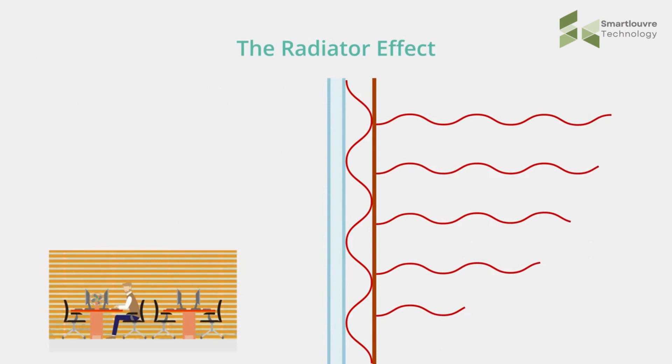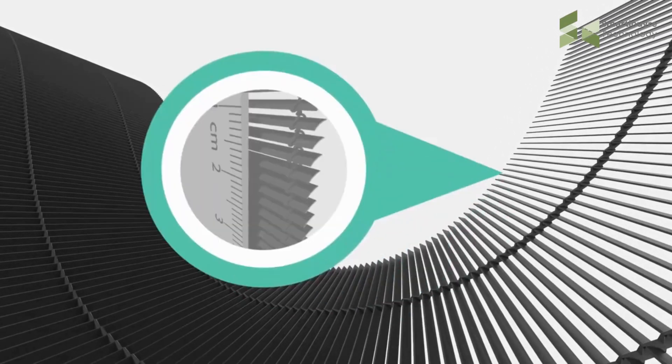This is why Micro Louver was invented: to stop the sun from reaching the glass whilst allowing perfect outward vision, good internal light and natural ventilation. Because the tiny louvers are paper-thin, Micro Louver is almost invisible when you look out.